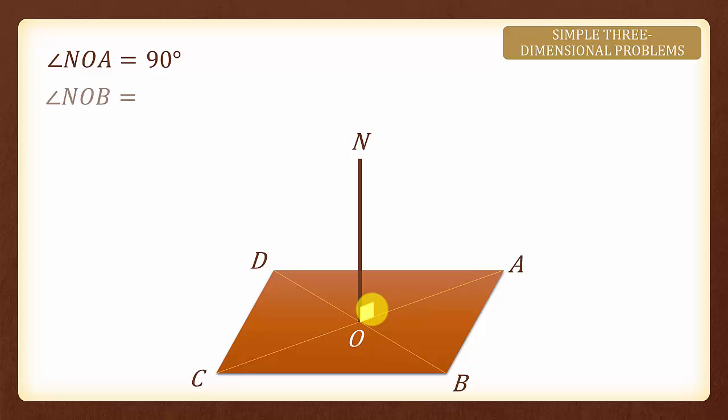Now what do you think is the value of angle NOB? Yes angle NOB is again 90 degrees because ON is a line that is vertical to the plane.